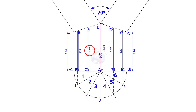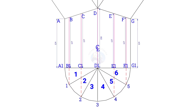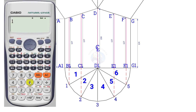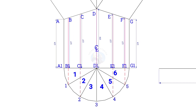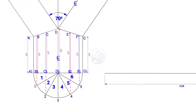Now calculate the circumference of the pipe. Multiply the pipe diameter by 3.14, or pi. Since the diameter of the pipe is 168mm, multiply it with 3.14. The circumference is nearly 528mm — draw a 528mm long line.